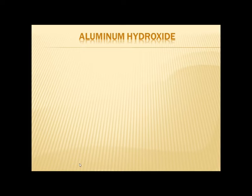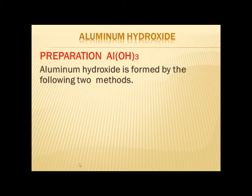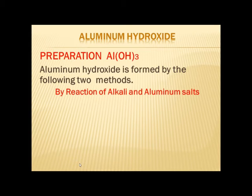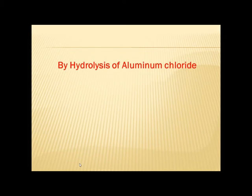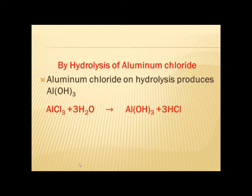Aluminium hydroxide is another example of a hydroxide. Two methods are used to prepare it. Number one: by reaction of alkali and aluminium salts — when an alkali reacts with an aqueous solution of an aluminium salt, aluminium hydroxide is formed. The second method is by hydrolysis of aluminium chloride — aluminium chloride on hydrolysis produces aluminium hydroxide.